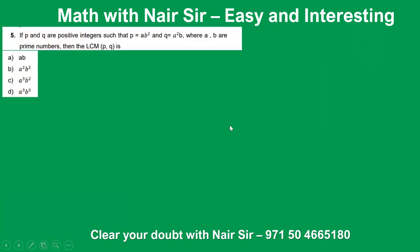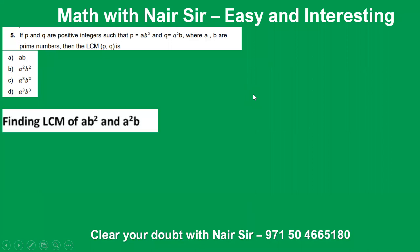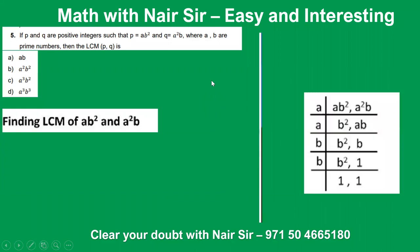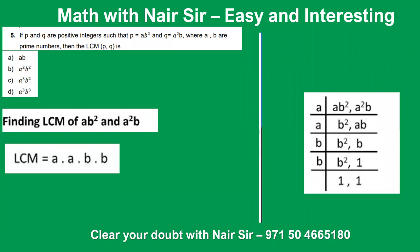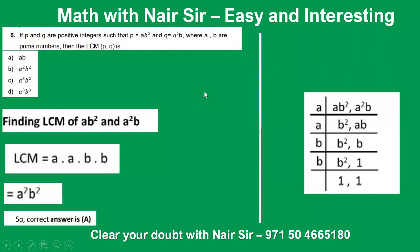Last question of your case study, 10th standard: If p and q are positive integers such that p = ab² and q = a²b, where a and b are prime numbers, then the LCM would be? Finding the LCM of ab² and a²b — you can write LCM as a × a × b × b, that is a²b². The answer is A.